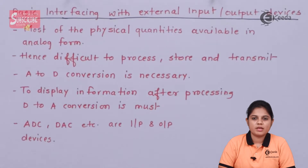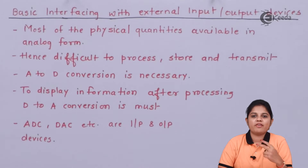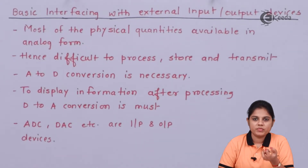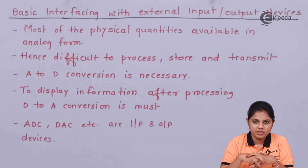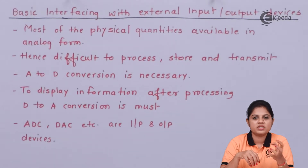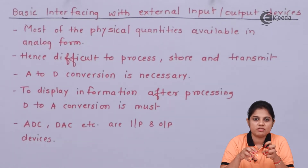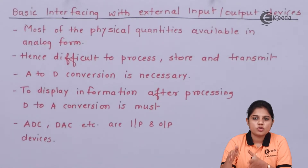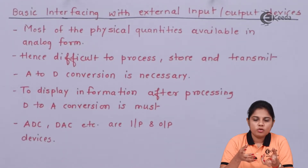Most of the physical quantities are available in analog form. For example, if we want to check the temperature of a particular room and maintain a constant temperature, we have to monitor the temperature continuously and manage ups and downs within a predefined range. We need a device to measure the temperature and send that value to the microcontroller, so the programmed microcontroller can take an appropriate action.